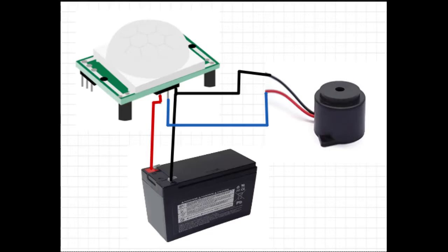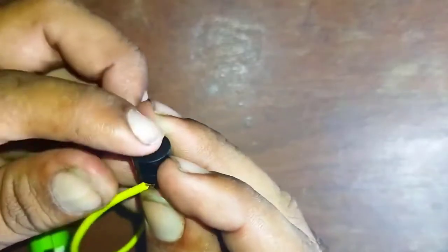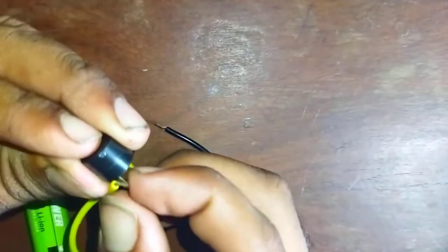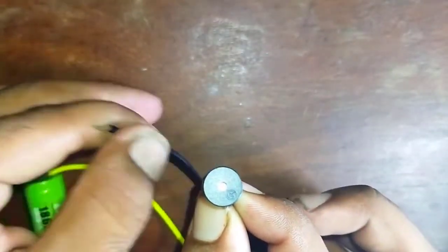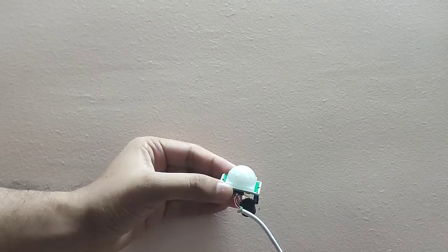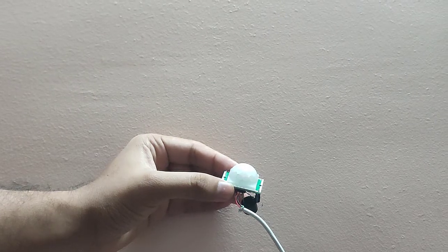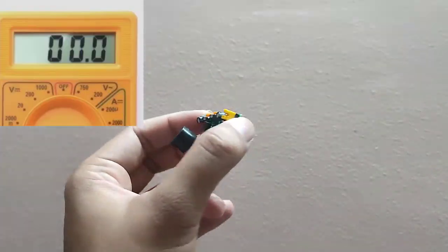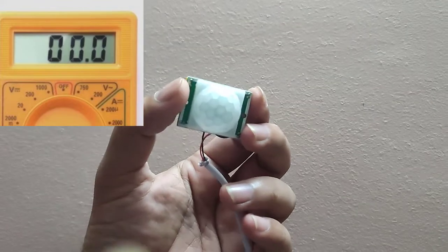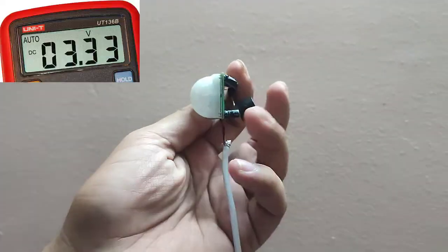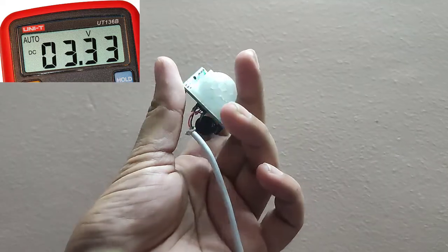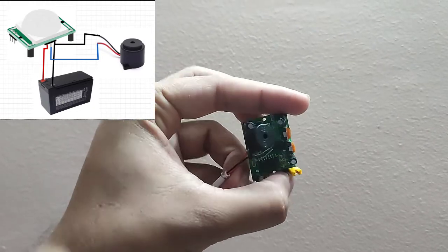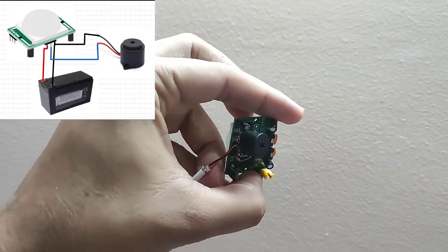This is the circuit diagram of the automatic motion detector alarm circuit using the PIR sensor. It is a very simple circuit containing a PIR motion sensor, buzzer, and power supply. We are using a 12V power supply and a buzzer with a 3.3V rating. The buzzer should only beep when the sensor detects motion. The voltage across the data pin is 0V when no motion is detected, so the buzzer does not beep. When motion is detected, the data pin outputs 3.3V, which is directly given to the positive terminal of the buzzer, making it produce a beep sound.